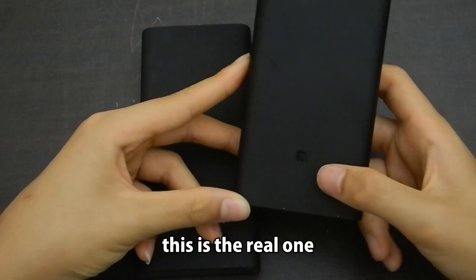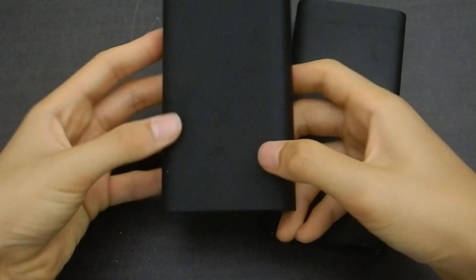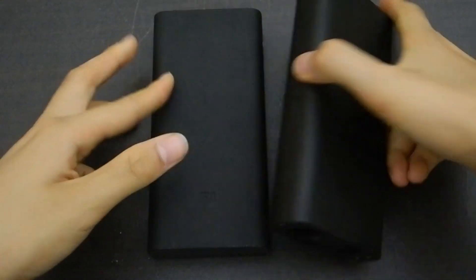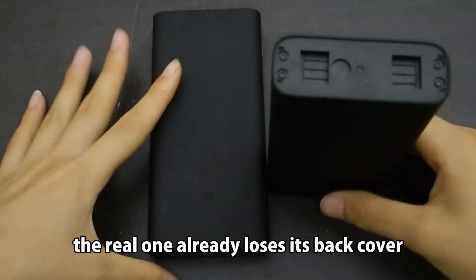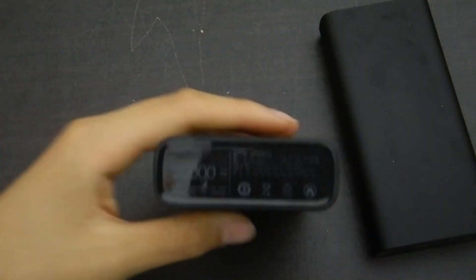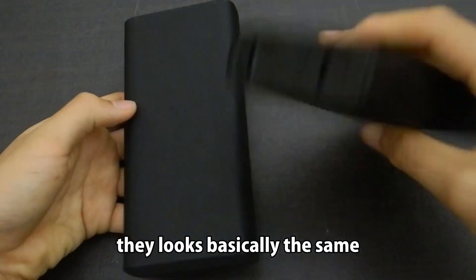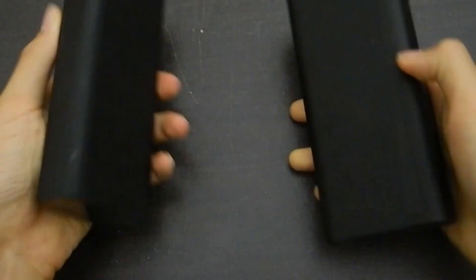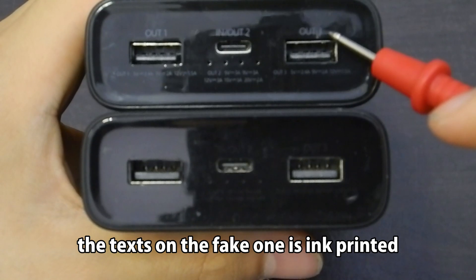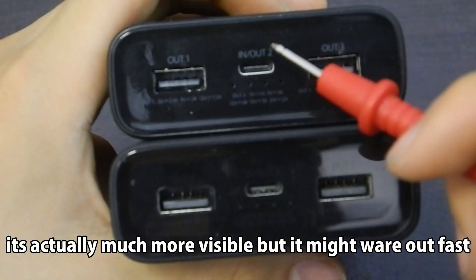And this is the real one. The Mi logo is reflective. The fake one isn't. The real one already lost its back cover. The fake one is ink printed.